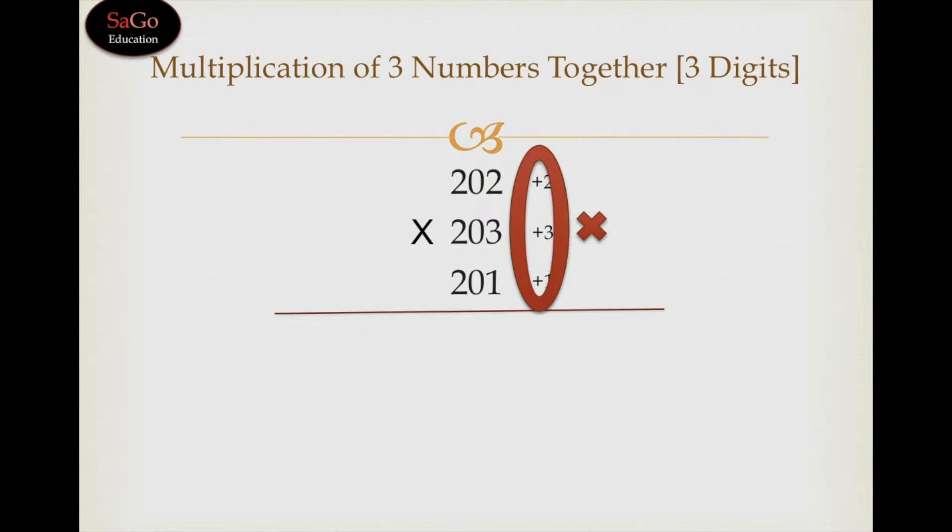2 times 3 times 1 gives us 6. Write down 6. But in base 200 there are two zeros, and the product is a single digit, so to balance the number we will prefix 0 before 6. Moving forward, put a slash.